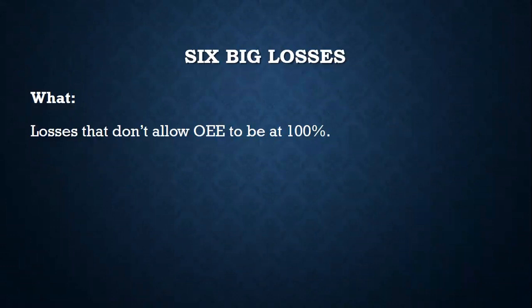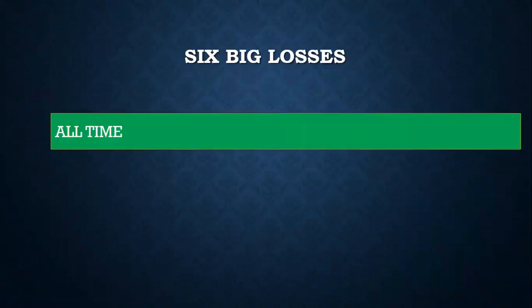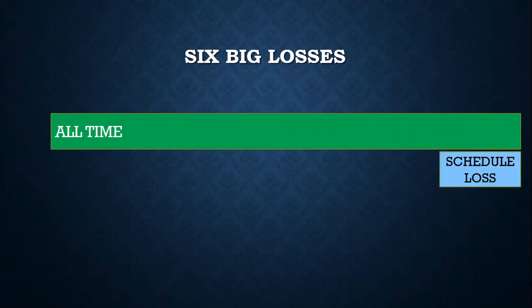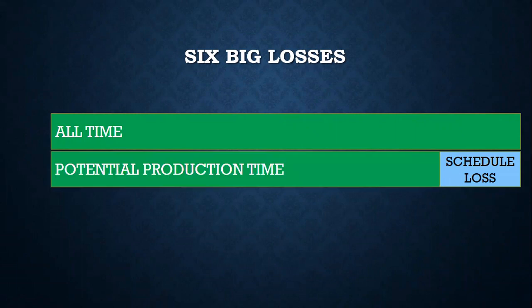To understand better — if this green line represents all time available — the first are scheduled losses, which are inherent. Scheduled losses represent that time period when production is not scheduled. The remaining time is potential production time, the maximum time available for production.